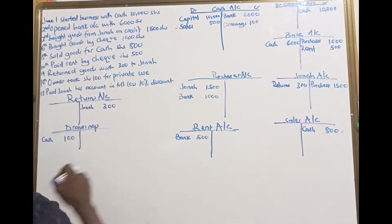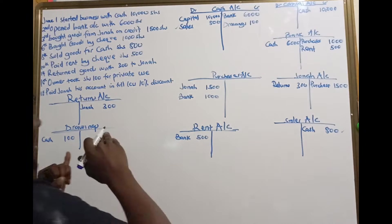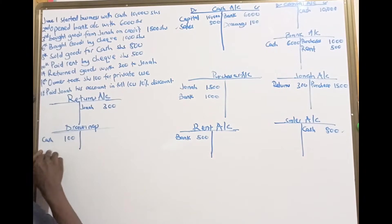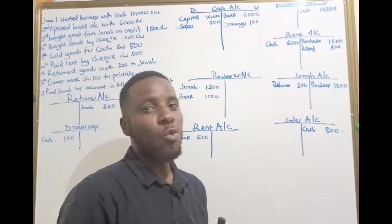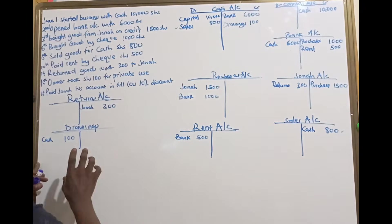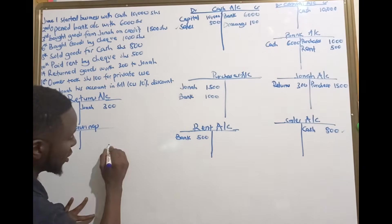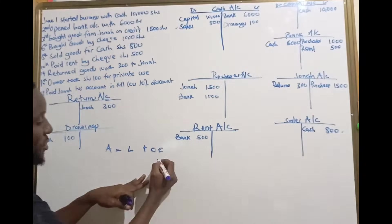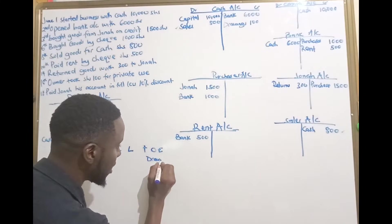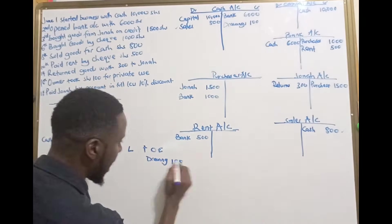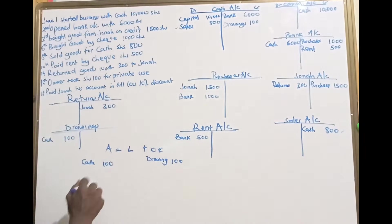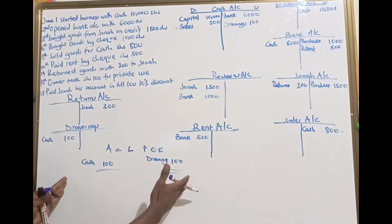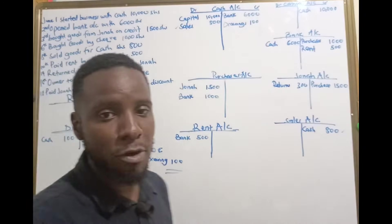When the owner takes out money for personal use, the drawings account is going to receive and the cash account will be credited with the amount of drawings. When someone says I took out money worth this, we check the cash account — is the money out? Yes, it's out in the name of drawings. You come to the drawings book and check whether that money had a double entry. On our accounting equation, assets equals liabilities plus owner's equity. Drawings worth 100 and cash as an asset worth 100 — we still balance our accounting equation.